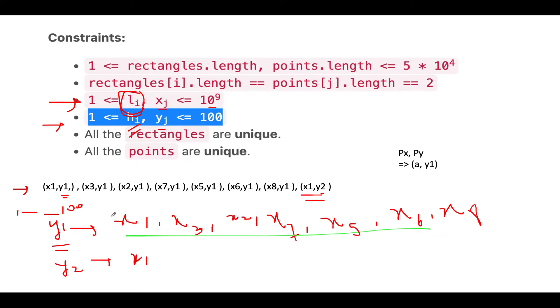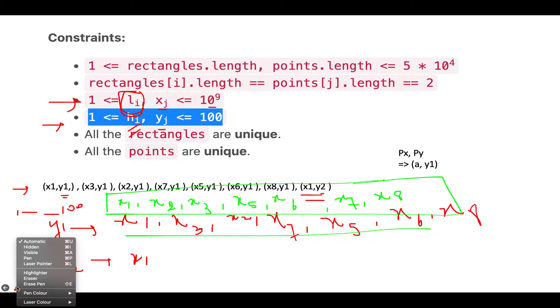In the next step what we can do is simply sort these x coordinates. Once sorting is done what would be the updated data over here? It would be x1 followed by x2 followed by x3 followed by x5 then x6 then x7 then x8. So we have created a sorted order of x coordinates for each y value that is present in my rectangles data set.